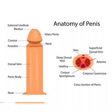The head is the tip of the penis, often covered by the foreskin. It contains the urethra, which transports urine and semen. When erect, the penis allows for sexual intercourse and prevents urine flow during ejaculation.